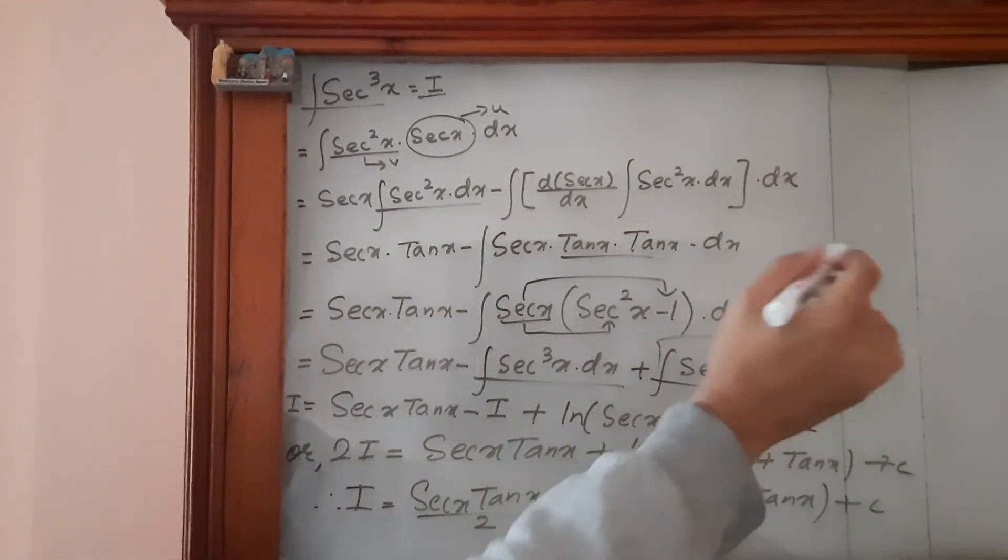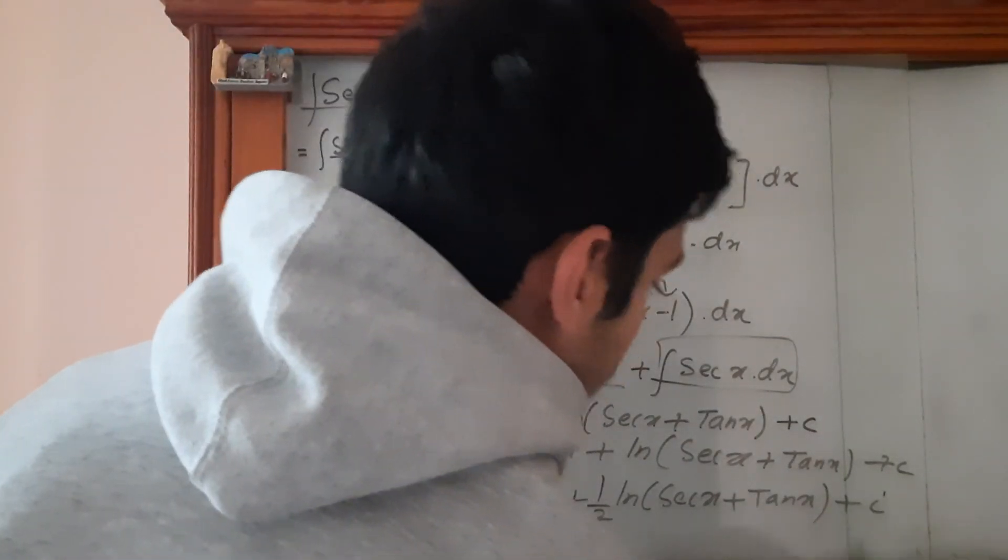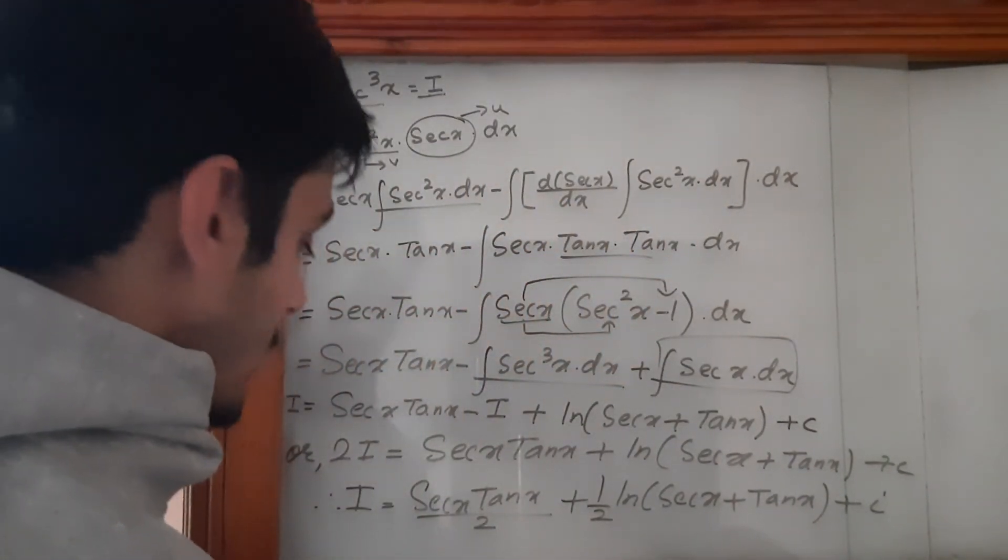Or if you want to divide the integration constant by 2 as well, you can write this as c'. It does not really make a difference.